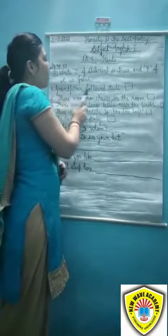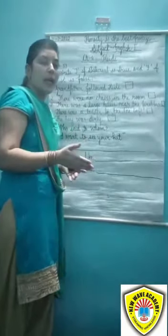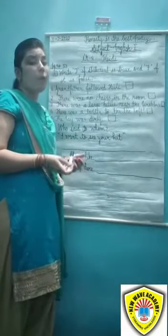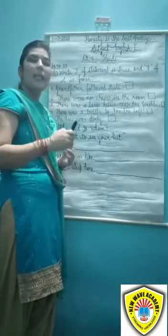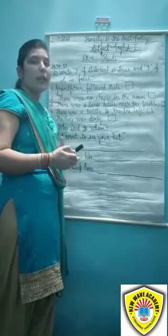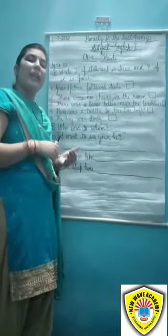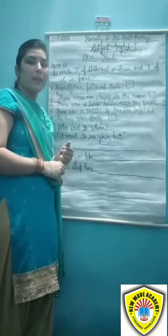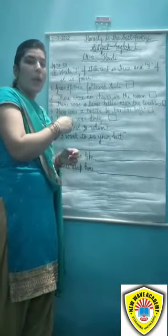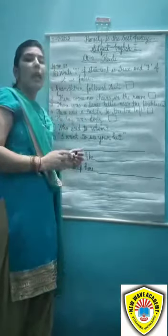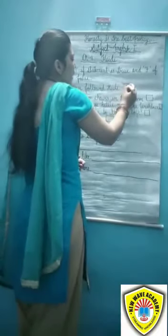The first statement is: Grandfather followed Haddie. 'Followed' means to come behind someone, to follow someone. So what is our statement? Grandfather followed Haddie. But actually, Haddie followed grandfather — she came behind him. So this statement is false, and we will put F over here.